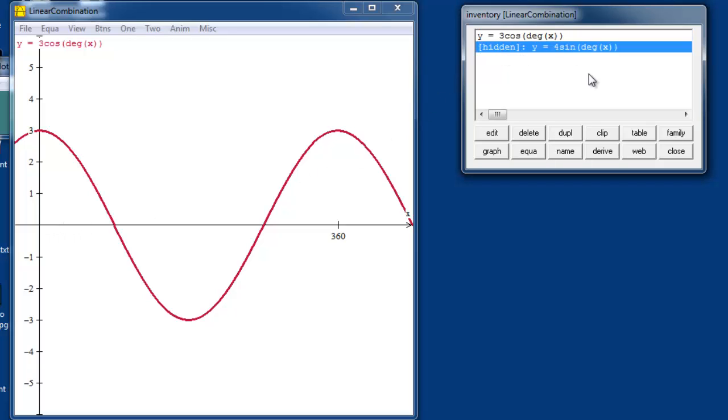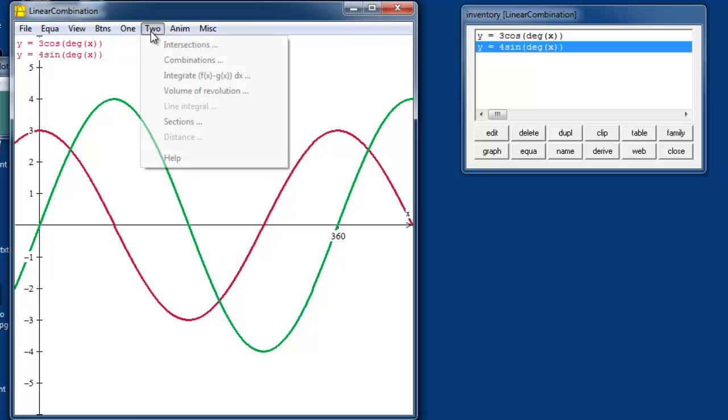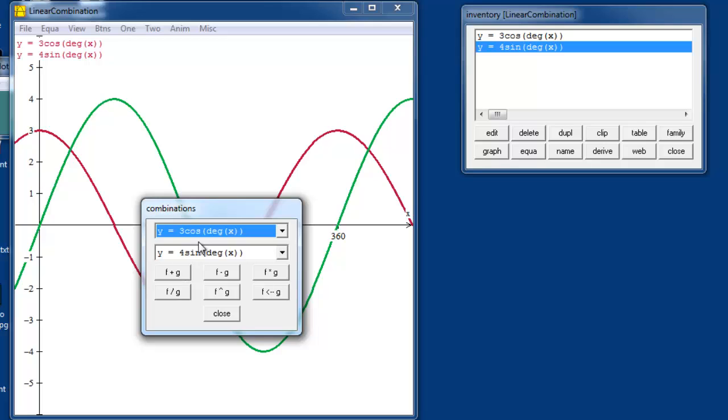Here's the equation, 3 cosine x in degrees. We can see it's got an amplitude of 3 and a period of 360 degrees. Now let's take the graph of 4 sine x here in green. You can see the sine function, and it's got an amplitude of 4 and a period of 360. Now we're going to add these two together. WinPlot allows us to do that simply under the 2 menu here. We have combinations of functions as an option, and one of the combinations is to add two functions. And here are the two functions I'm going to be adding, 3 cosine x and 4 sine x.